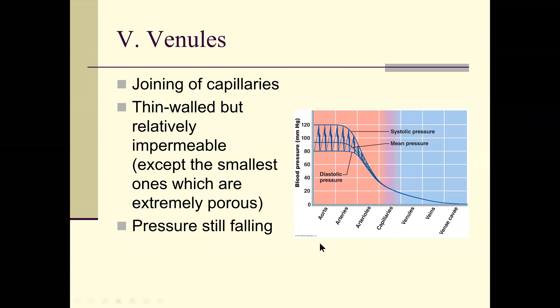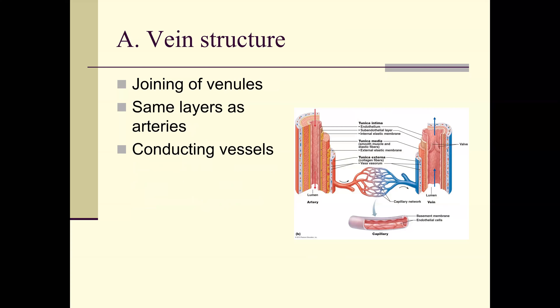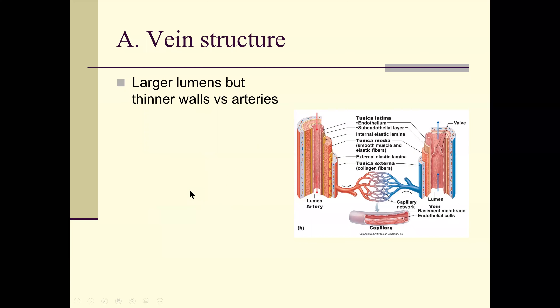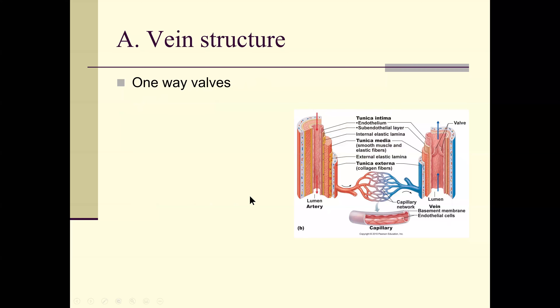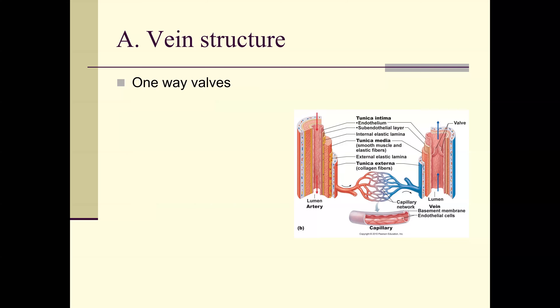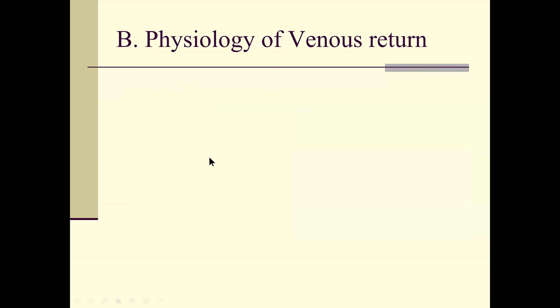Veins join venules and have the same layers as arteries but are not as thick. They have larger lumens but thinner walls, and serve as blood reservoirs, only partially filled. Veins have the lowest pressure in the circuit. Because pressure is so low, veins have one-way valves to prevent backflow. We depend on breathing and muscle contraction to move blood along, so valves keep blood moving forward.